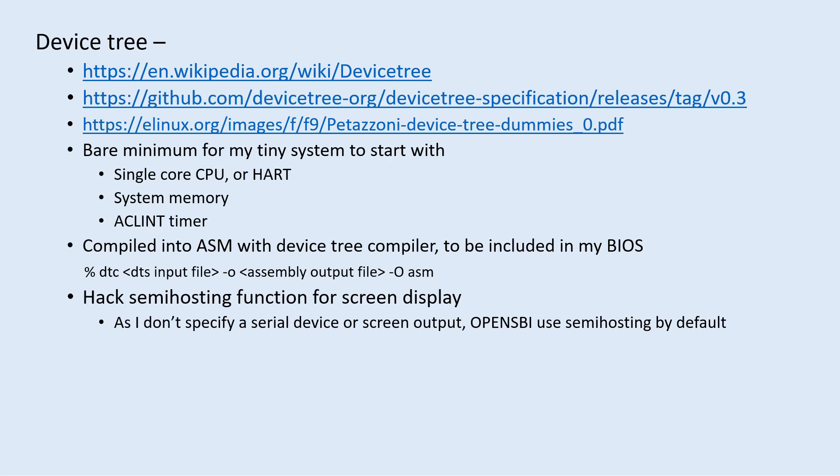For this experiment I have a very tiny device tree that only has three major components: a single-core CPU or hart, a CLINT timer, and memory blocks. The tree specification is first compiled with the device tree compiler on Linux into RISC-V assembly code, and this assembly code becomes part of my BIOS, whose address will be passed to OpenSBI as arguments.